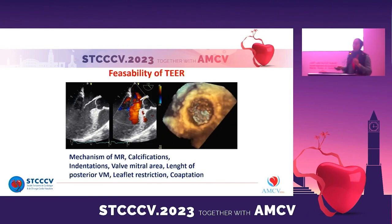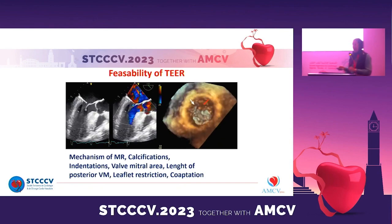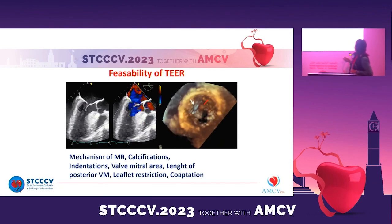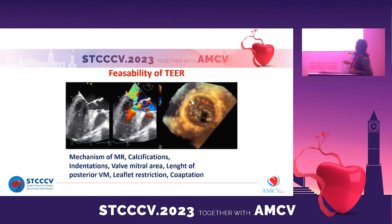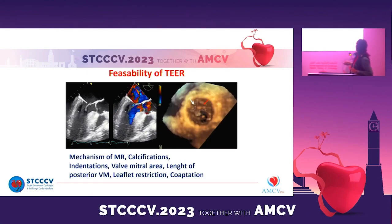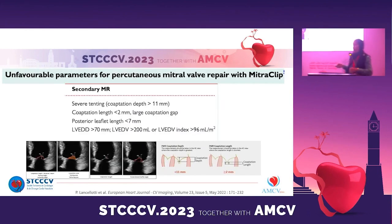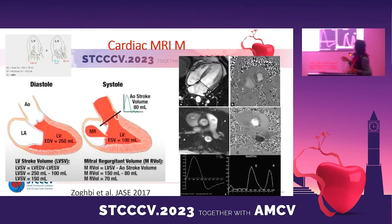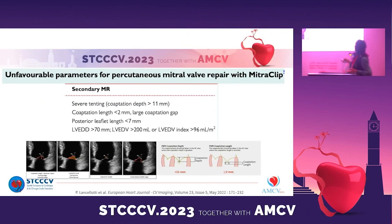We then have to assess feasibility of MitraClip repair. Transesophageal echocardiography with 3D is very informative — we can see the mechanism, the indentation, and whether there is a cleft. Most importantly, we use the Everest criteria: we have to look at the depth of coaptation and the length of coaptation. Here we summarize the criteria for mitral repair.